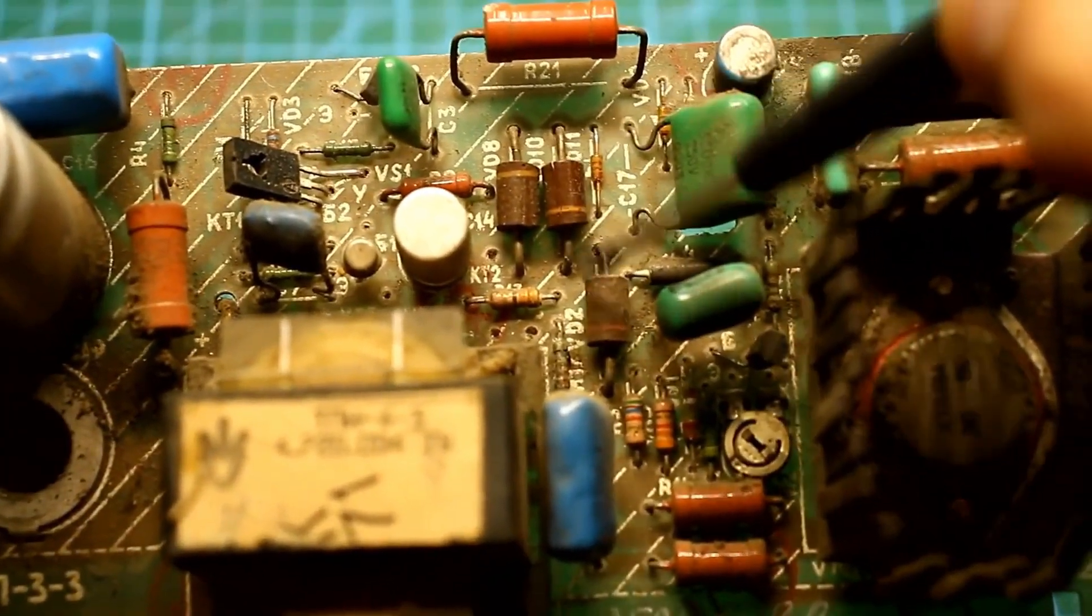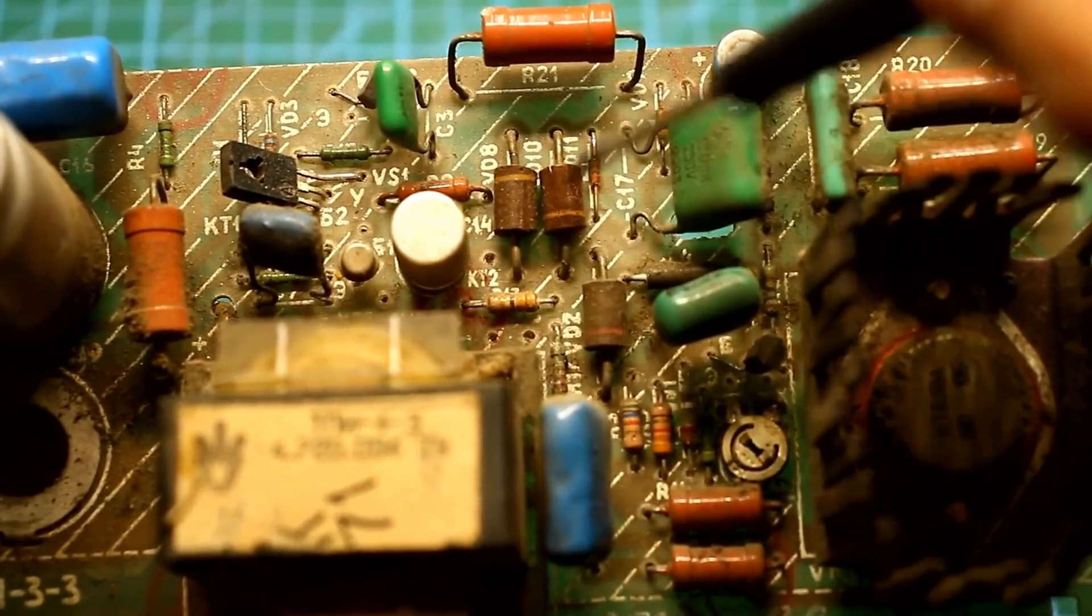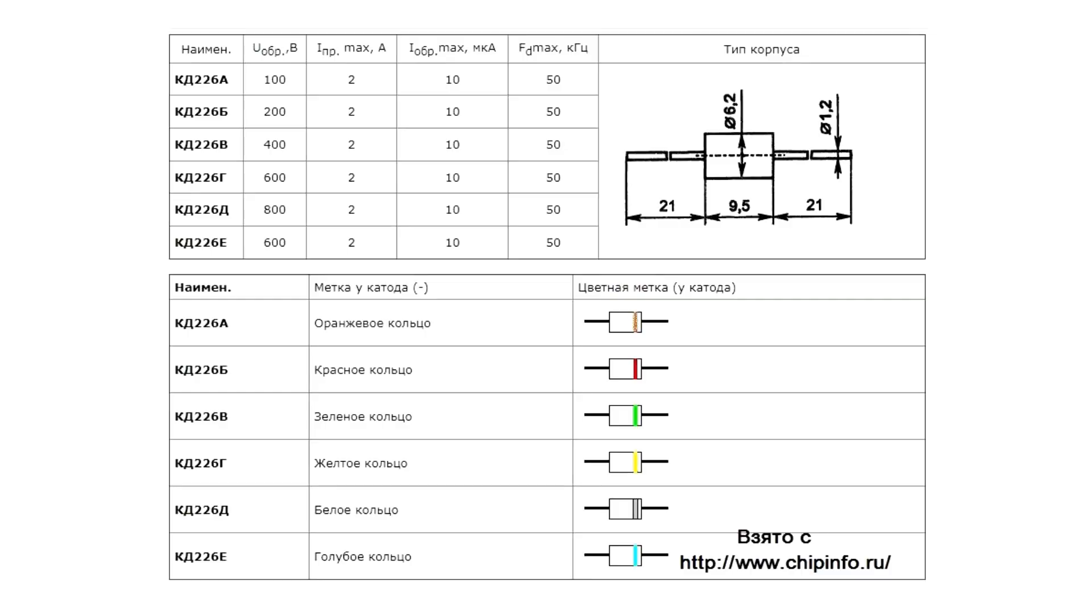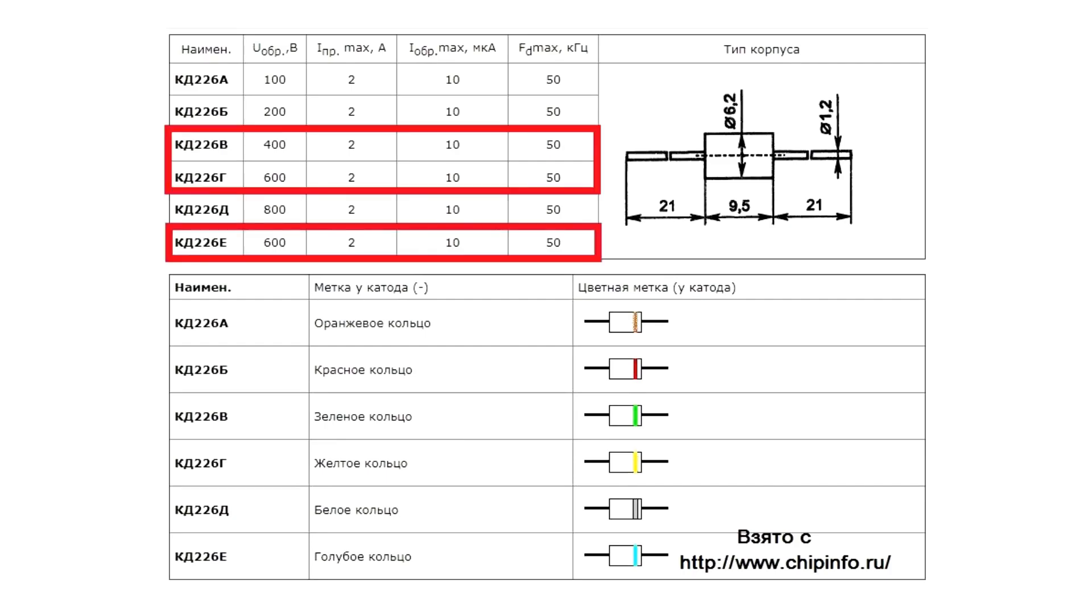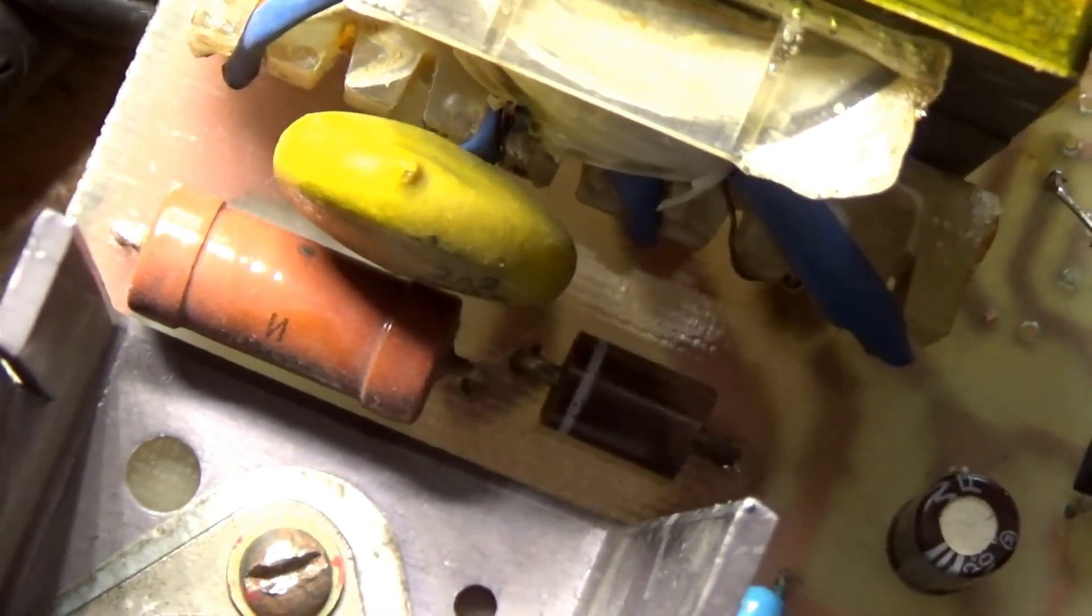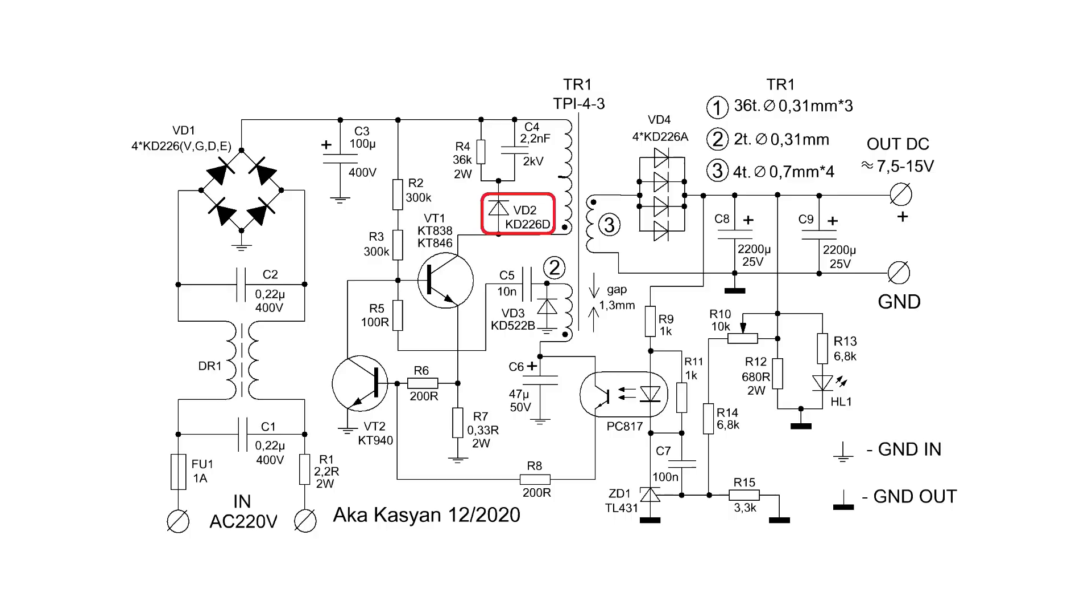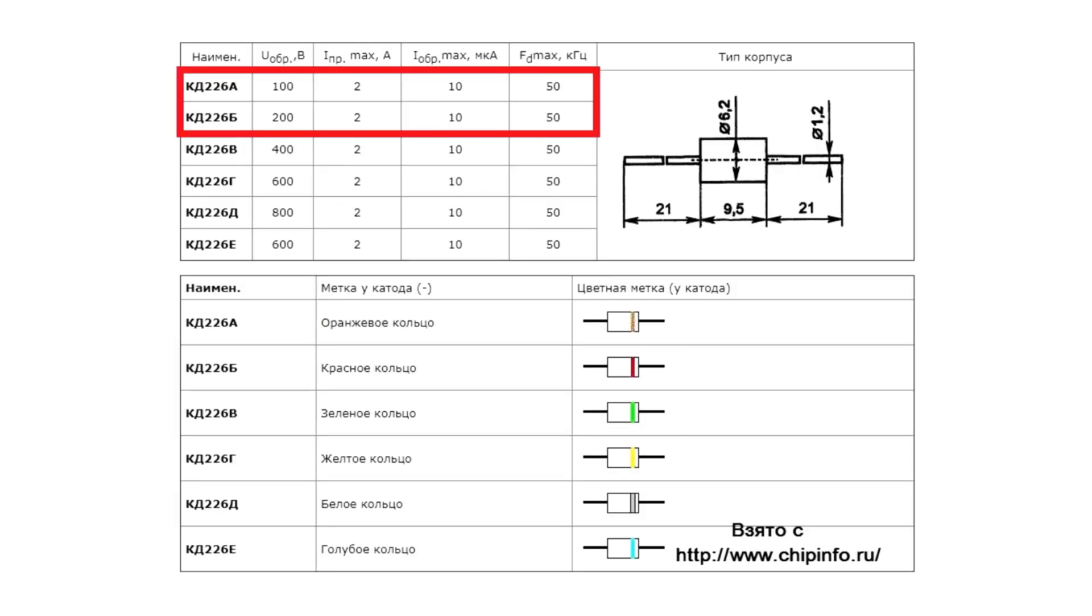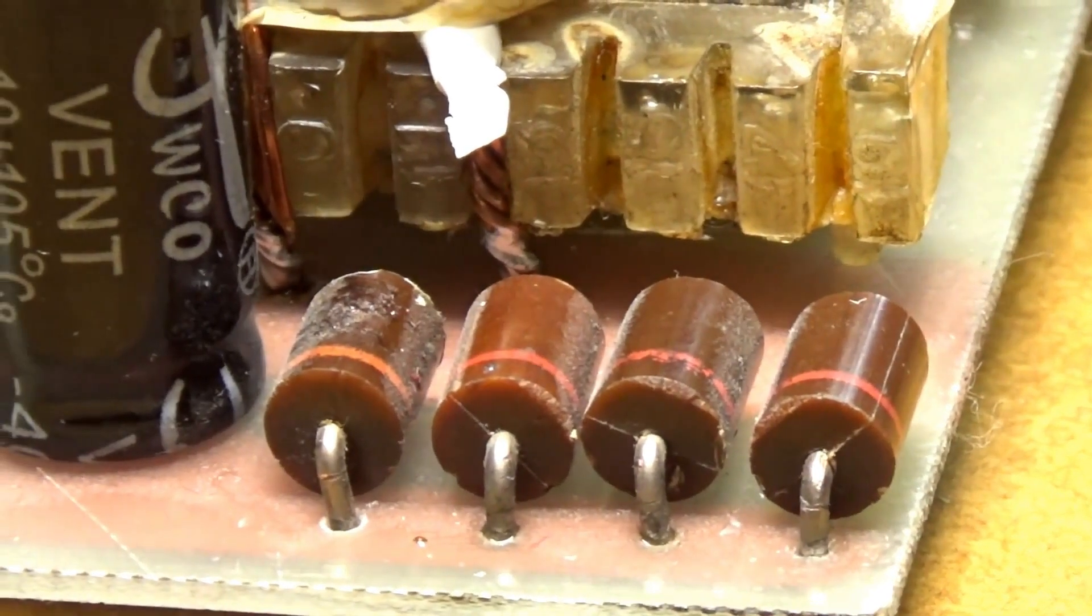Next, we desolder the KB226 diodes, and pay attention to the index, or more precisely the color coding. Those rated for 400 to 600 volts will be used as the input rectifier. Those rated for 800 volts can be used in the lamp circuit, which suppresses the transformer's reverse spike. The low-voltage diodes from this series will be used as the output rectifier.